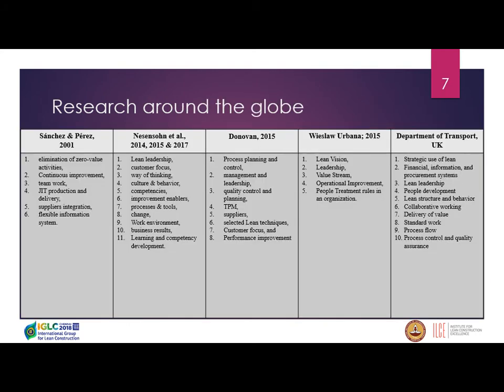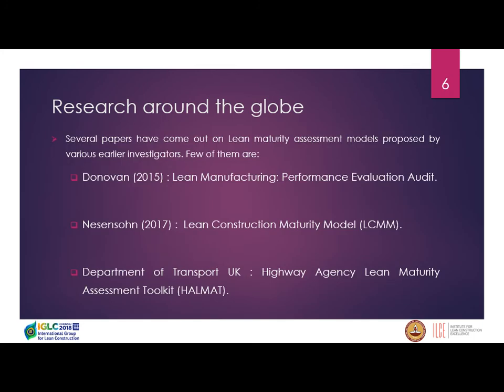There have been a few models that have emerged globally. In the manufacturing industry, Donovan (2015) made an audit-based model using a binary yes/no system to evaluate lean performance. Nessenhan has presented a lean construction maturity model at IGLC over the past three to four years — it includes all the factors and concepts but lacks detail on process. One more organization from the UK is the Highway Agency Lean Maturity Assessment Toolkit, called HALMAT, used in the transport industry.